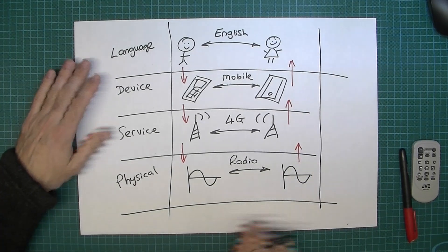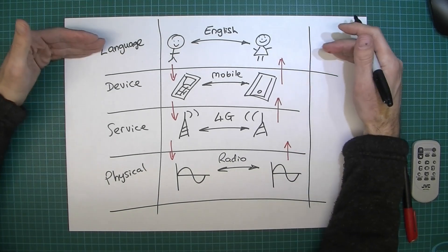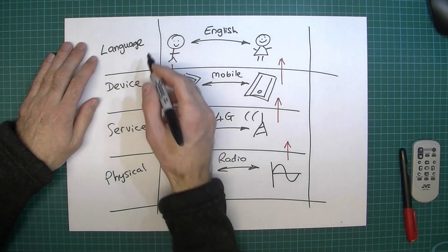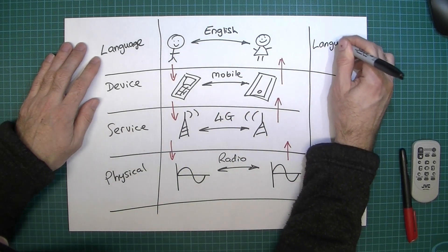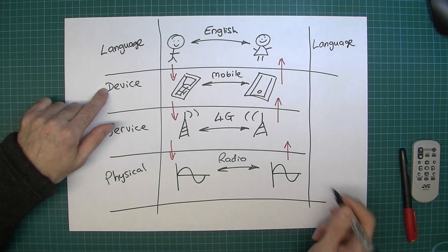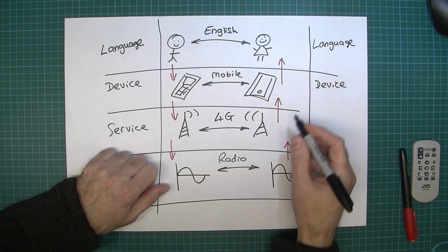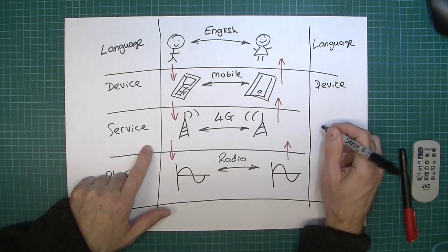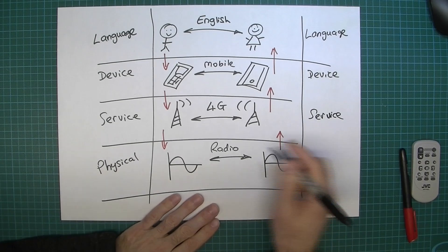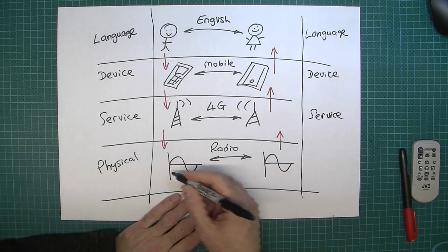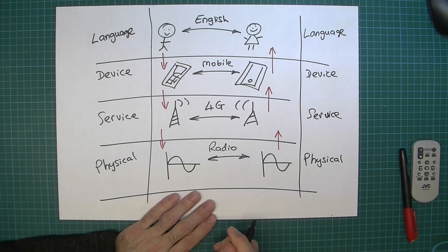Now it should now be quite apparent that each side has its own layer of the protocol which is going to match up. So this language hopefully is going to match up with this language. And this device is going to be compatible with this device. Not necessarily the same make but it will be compatible. This service is going to be compatible with this service. And this physical transmission medium or whatever we might want to call it, it's going to be compatible with that one.